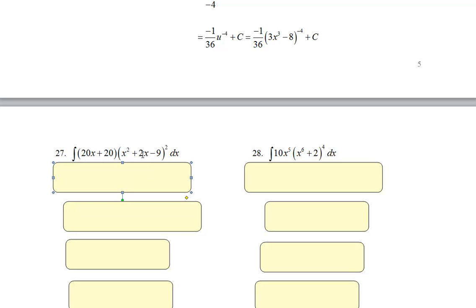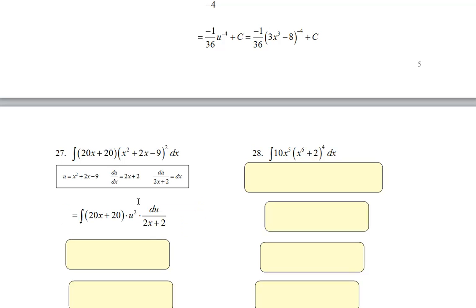u is this. So my du over dx would be 2x plus 2. And so solving for dx I'd get du over 2x plus 2. So u is going to go right here. This is going to go right here. So let's see if I did this in this box. Left that alone. There's my u squared. And there's that du over 2x plus 2.